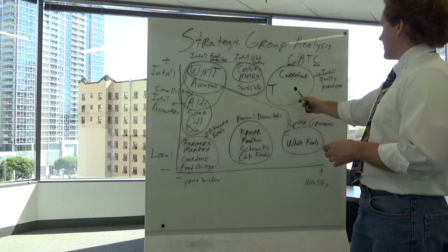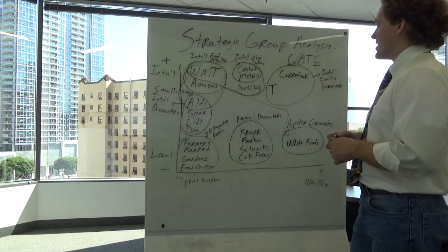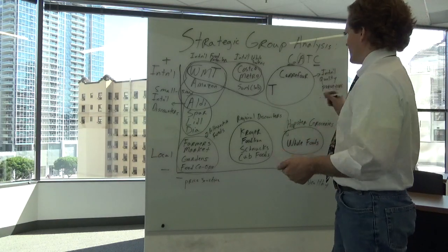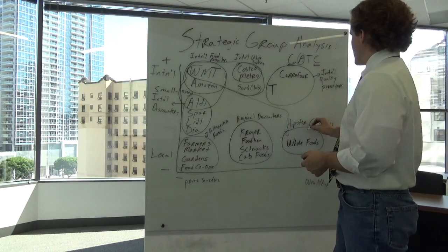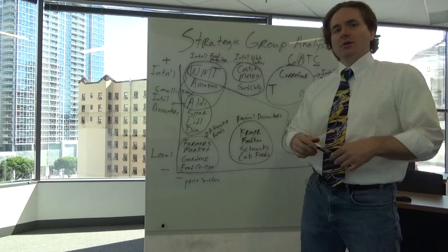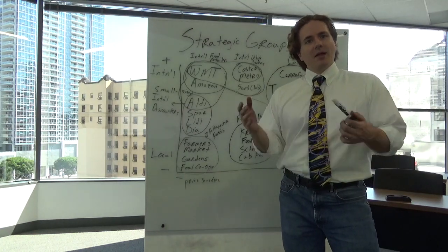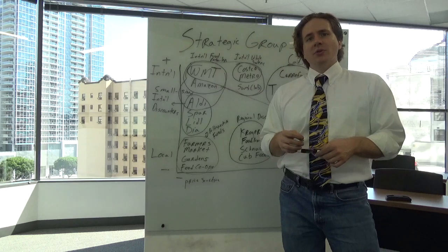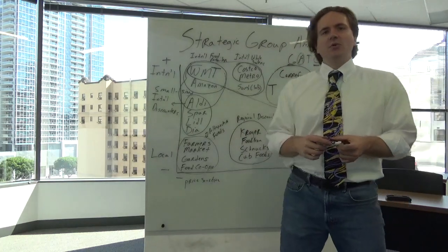Of course, we still don't have a lot of international quality purveyors. But maybe Amazon's acquiring of Whole Foods could shift them up in there and possibly Amazon could compete in three segments at the same time. That could give them a real monopoly with the food industry. But that's the kind of stuff you see when you draw this out.